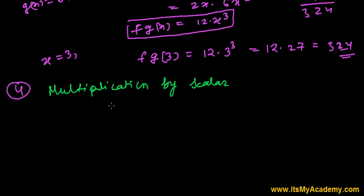What happens when a scalar quantity multiplies a real-valued function? Let's say f(x) is a function defined from X to R. It's a real-valued function where X is a subset of real numbers.